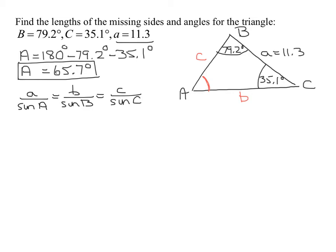To use the law of sines, I need to know a side and its opposite angle. Let's look at what we have: angle B, angle C, side A, and we've found angle A. So now I can use the law of sines to find B first, and then I'm going to find side C.